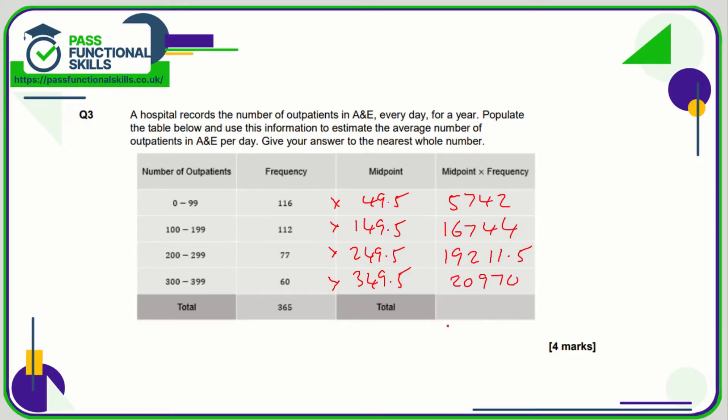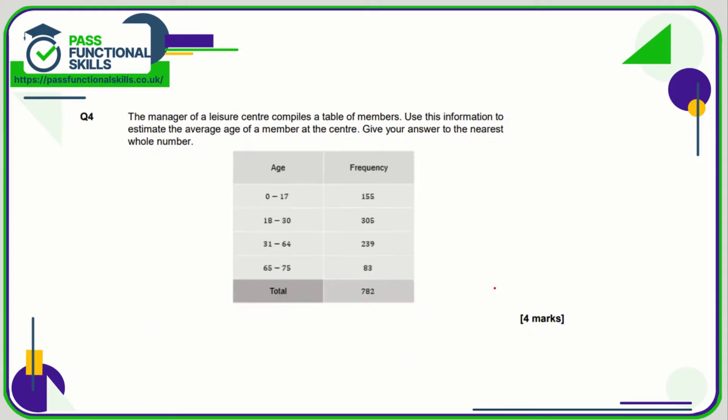And again, add this column up, we're going to get 62,667.5, and this is the figure which we need to divide by 365, and that comes to 171.69, or 172 to the nearest whole number.